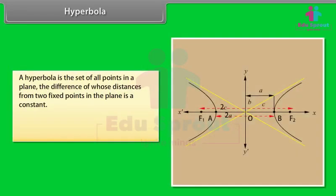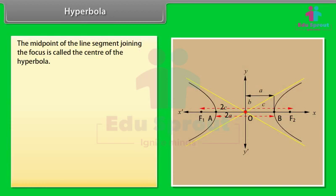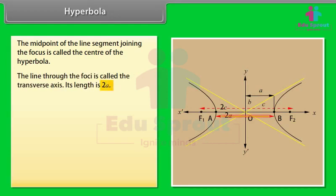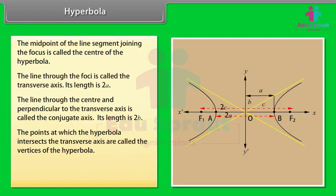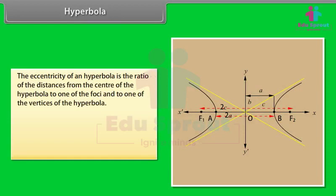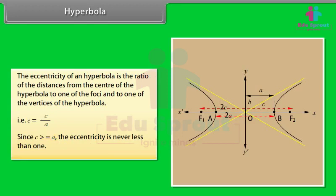A hyperbola is the set of all points in a plane, the difference of whose distances from two fixed points in the plane is a constant. The two fixed points are called the foci of the hyperbola. The midpoint of the line segment joining the foci is called the center. The line through the foci is called the transverse axis with length 2a. The line through the center perpendicular to the transverse axis is called the conjugate axis with length 2b. The vertices are the points where the hyperbola intersects the transverse axis. The distance between the two foci is 2c. The eccentricity e = c/a, and since c ≥ a, the eccentricity is never less than 1.